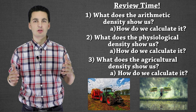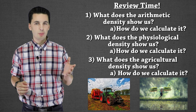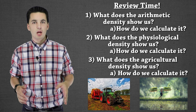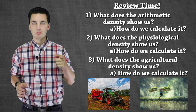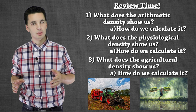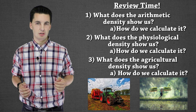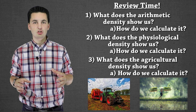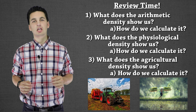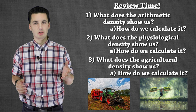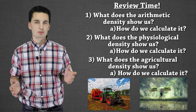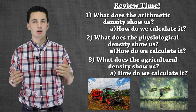Arithmetic density is the easiest to obtain — it's our total population divided by total land, showing us where people are living and how close together they are. Physiological density is our total population divided by arable land, showing us how much stress we put on our land and how much food we need to produce per unit of land to feed our population. Agricultural density is our total farmer population divided by arable land, showing how many people are working our land, how efficient our technology is, and how efficiently we're using our people and capital to produce food.